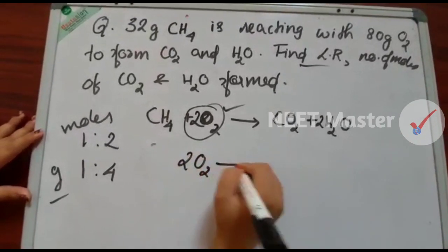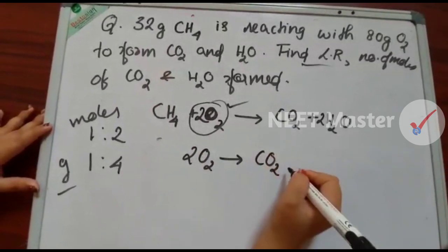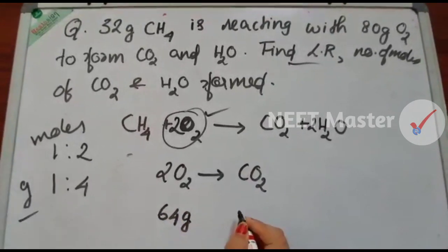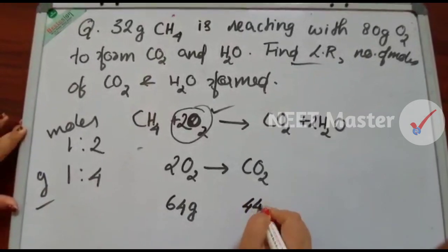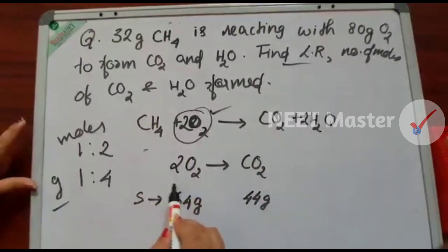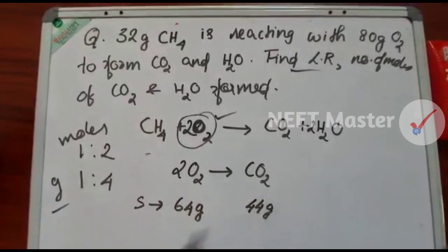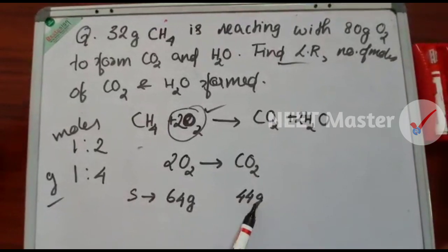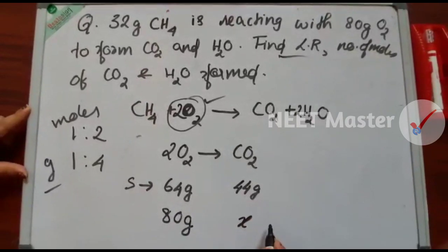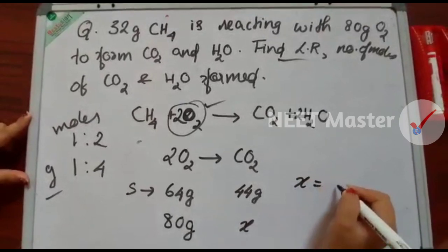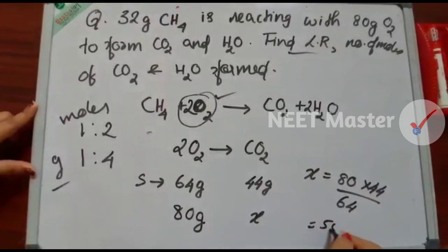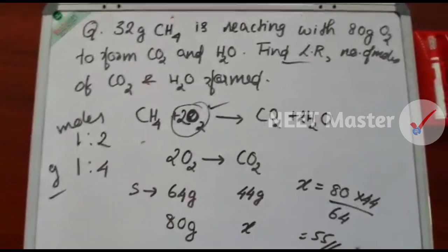Let's do this. 1CH4 + 2O2 giving 1CO2. In standard condition, 64 grams of O2 gives 44 grams of CO2. Here we have 80 grams. What is X? How do we cross multiply? X is equal to 80 times 44 divided by 64. We have 55 grams of CO2.